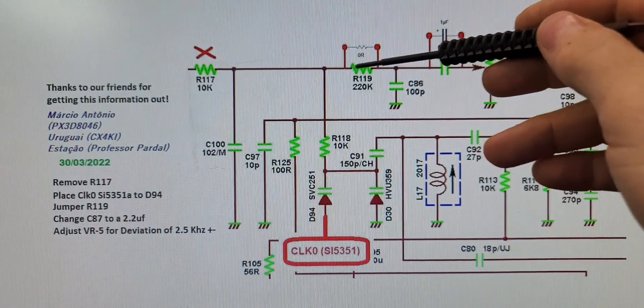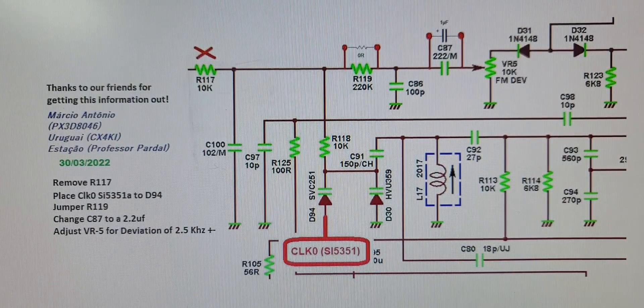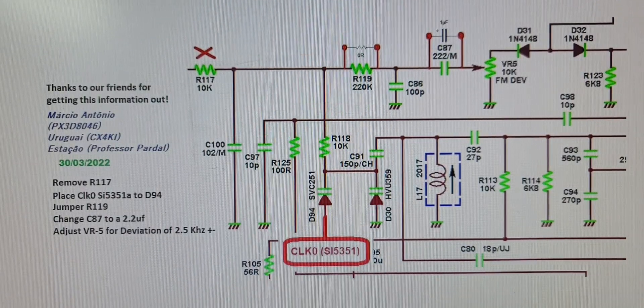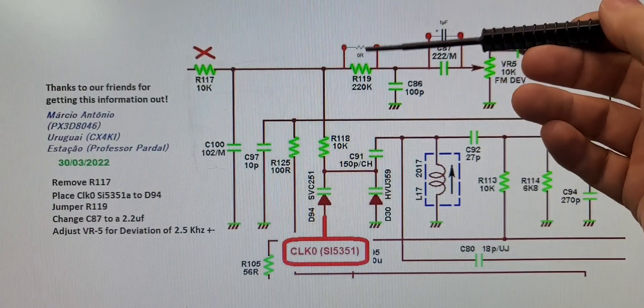Put a zero-ohm jumper here. When we say zero-ohm resistor, we mean it's a little resistor, but it has no resistance, so it's just a jumper. So just jumper that,